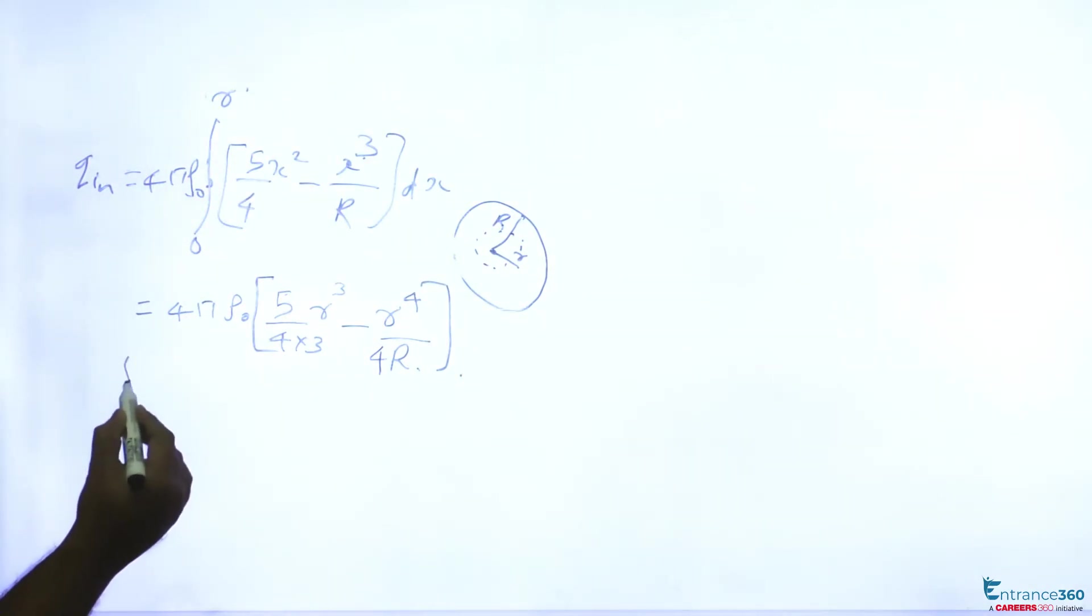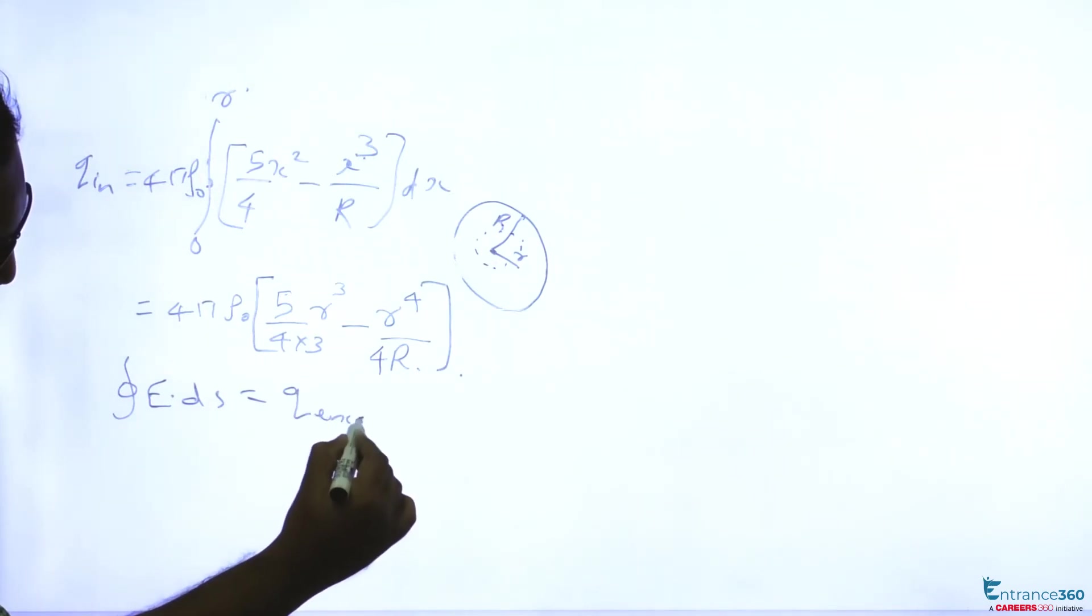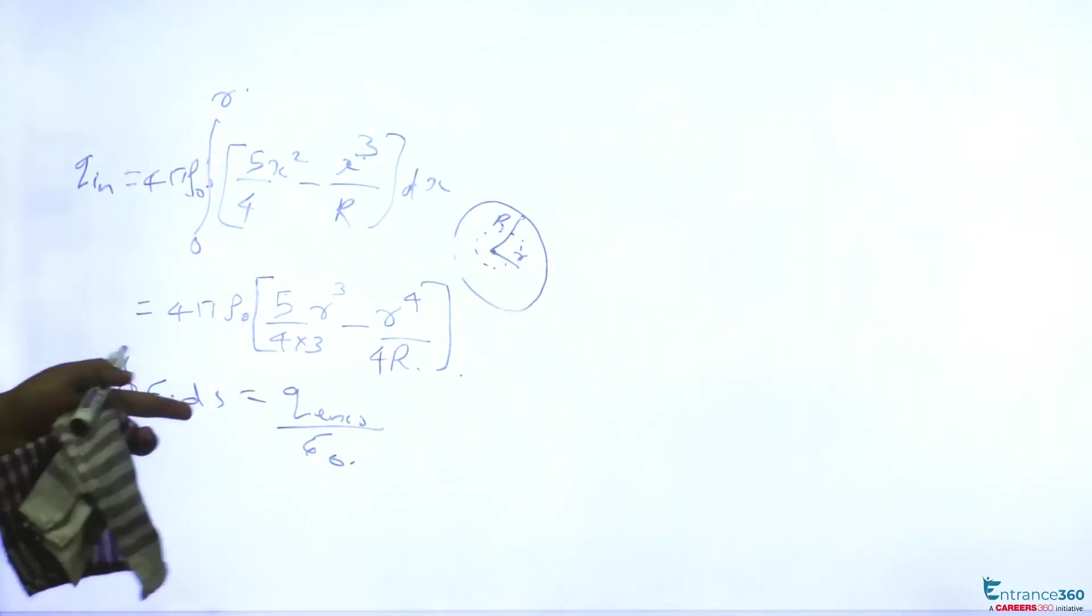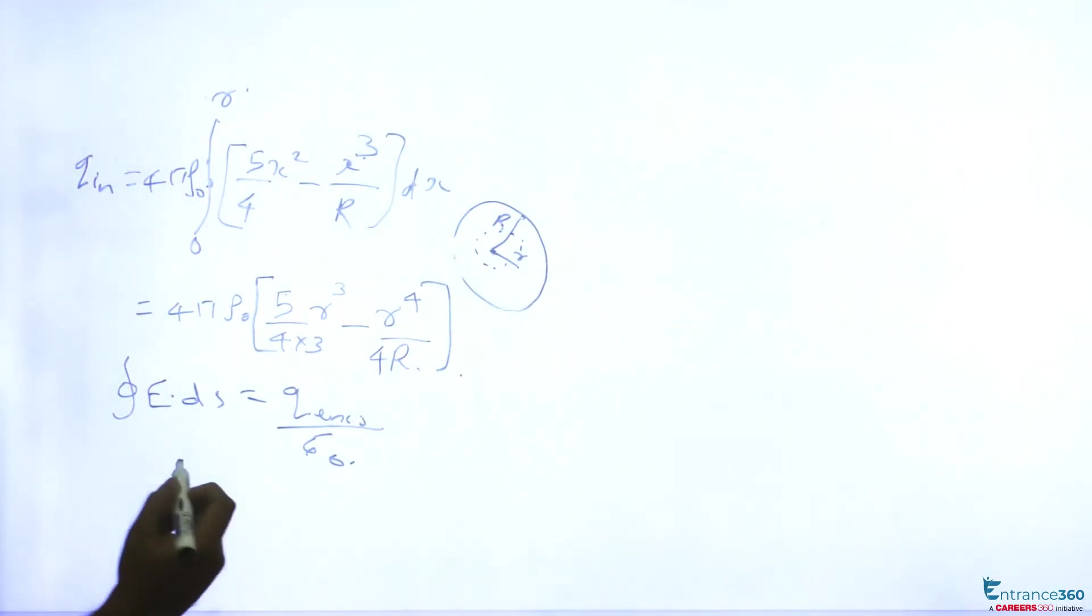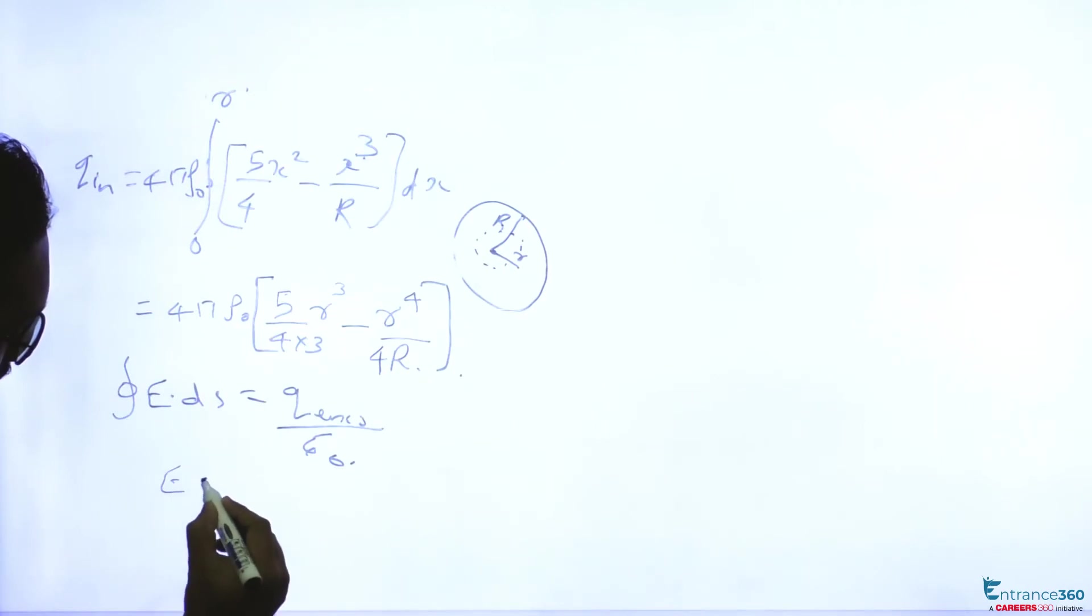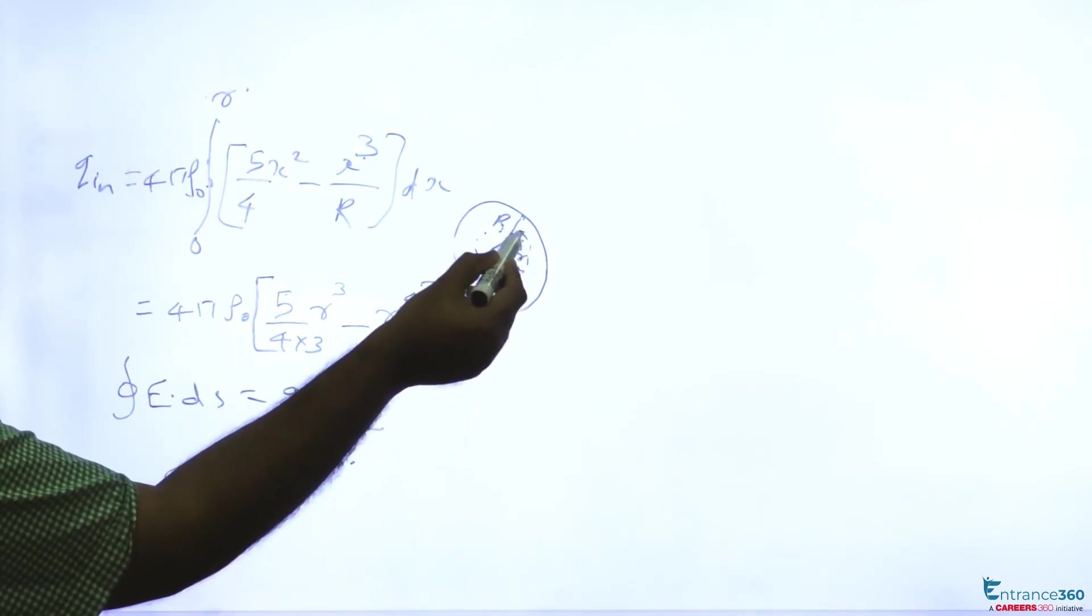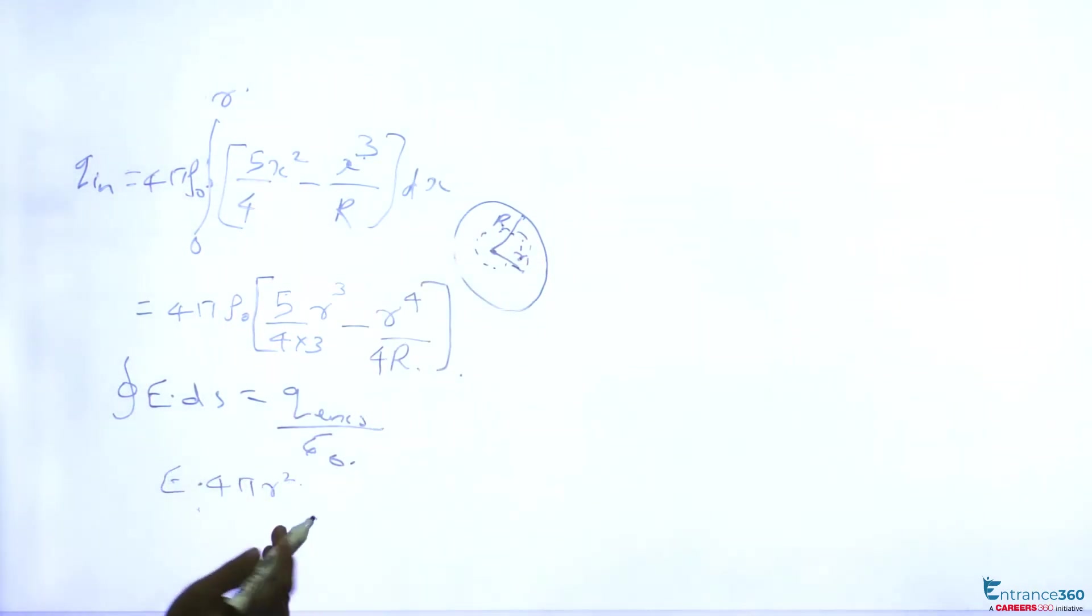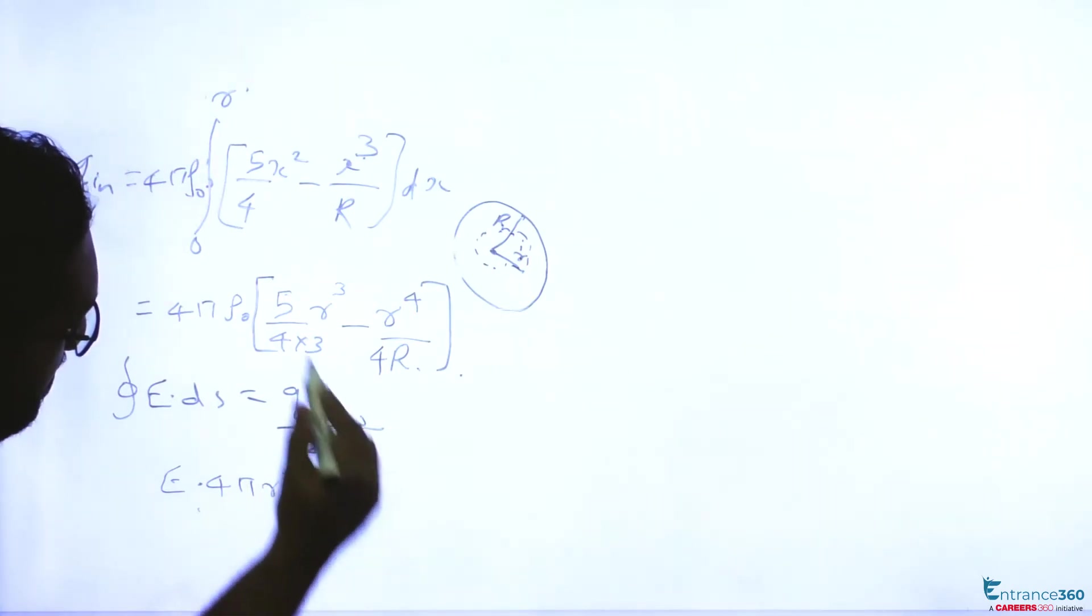By Gauss's law, integral of E·ds equals q_enclosed by ε₀. So from here we can write E into 4πr². We are considering a Gaussian surface at a distance of small r, 4πr² equal to q_enclosed is this value.